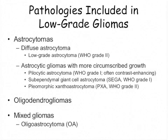As far as the pathologies included in low-grade gliomas, the three main types include astrocytomas, oligodendrogliomas, and a combination of astrocytic and oligodendrogliomas — a mixed glioma with the features of both. Among the astrocytomas, there are two broad categories: the more common diffuse astrocytoma, the entity we know as a grade two low-grade astrocytoma, and then a group that are better circumscribed, including tumors such as the pilocytic astrocytoma, the SAGAs, and the pleomorphic astrocytomas.